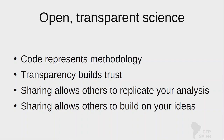Why would we want to release code? It's part of this movement towards open, transparent science. The code is the methodology. Releasing it is a way of saying to people: this is the process, I've vetted it, it works, have trust in me. It also allows others to replicate what you've done — does this work as I think? — or to extend or change what you've done, applying the methodology to a different dataset, a different problem, or adding extra analysis.